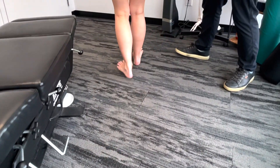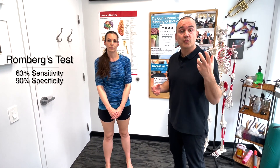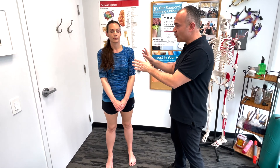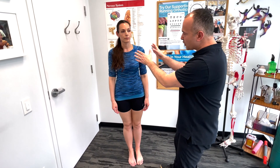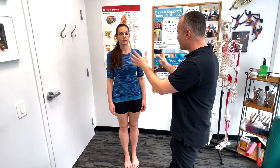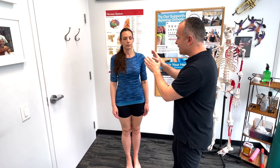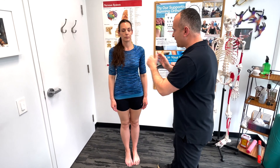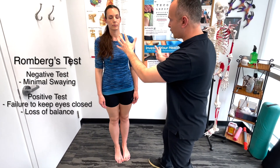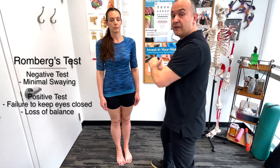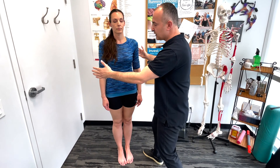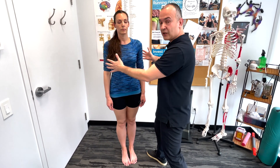Now we'll assess the patient's ability to maintain balance through proprioception — their sense of joint positioning. Lindsay will stand with legs together and arms loosely at the side. First with eyes open, we observe for about 20 seconds, looking for any sway. Then eyes closed — we observe for 30 seconds. A positive test would be if Lindsay loses her balance, starts swaying, steps out, or in severe cases falls. Stand close enough to stop them if they fall.